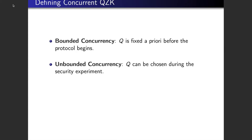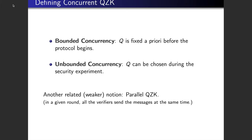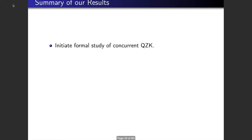There are two notions of concurrent QZK that we can consider: bounded concurrency and unbounded concurrency. In bounded concurrency, the number of sessions Q needs to be fixed a priori, even before the protocol begins. In unbounded concurrency, the malicious verifier can choose how many sessions to run at the beginning of the security experiment — it need not be specified as part of the protocol description. We can also consider a weaker notion, which is parallel QZK, where all verifiers send messages at the same time. While this is not the most useful notion in practice, parallel ZK is still useful for constructing MPC protocols.